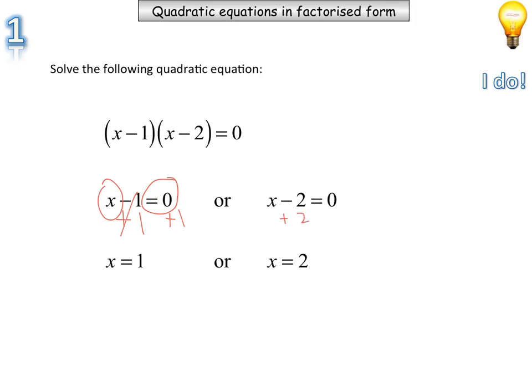And over here, we've got plus two, plus two, x is equal to zero. Sorry, x is equal to two. This one was x is equal to one. This one is x is equal to two. Then we'll write the last line, x is equal to one or two.